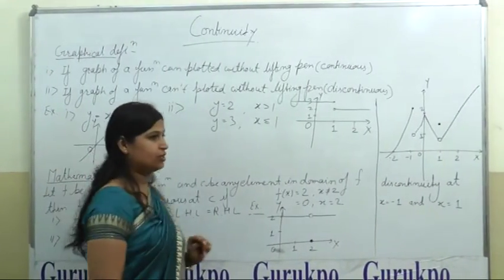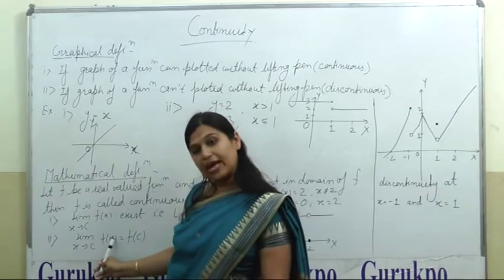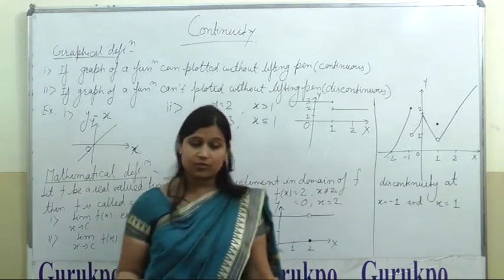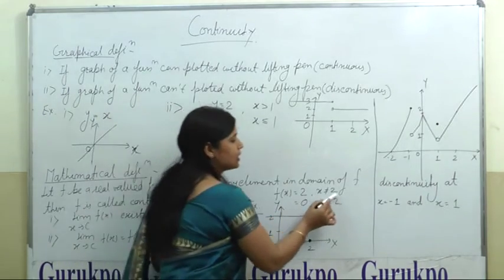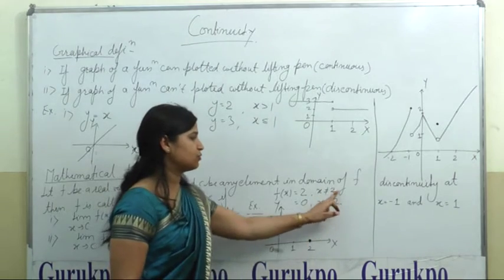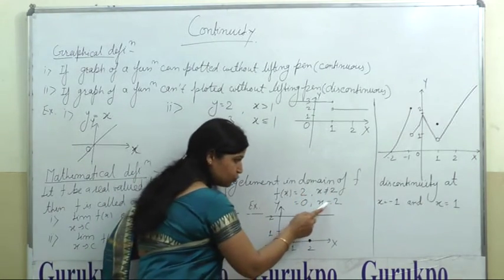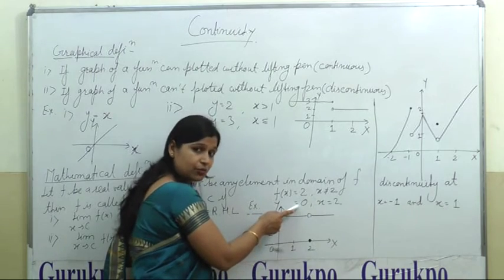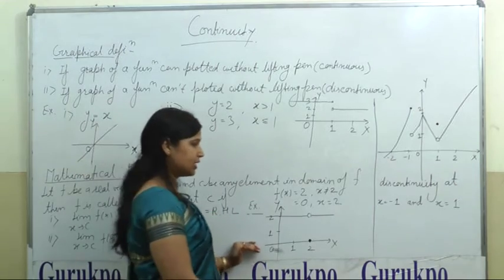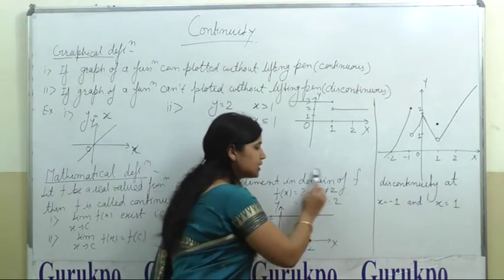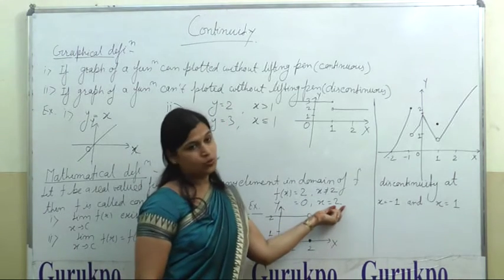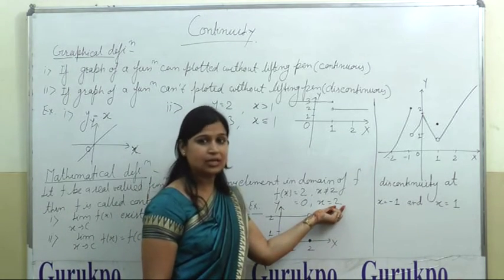Now the second condition says the limit value of the function at x equals 2 should equal the value of the function at that point. We know the limit value at x equals 2 is 2, but the function value at x equals 2 is 0. That means the second condition does not hold, so the function is not continuous at x equals 2. Therefore x equals 2 is the point of discontinuity.